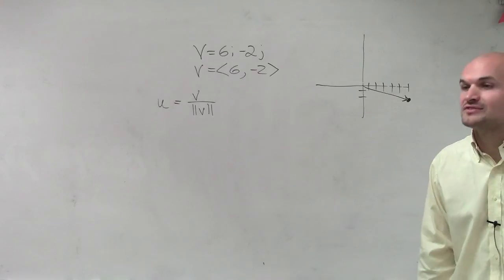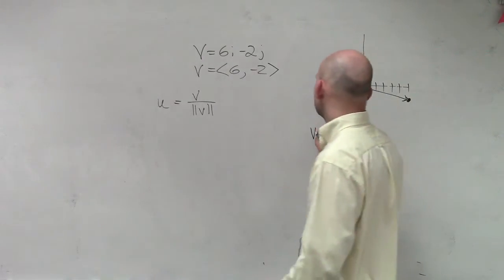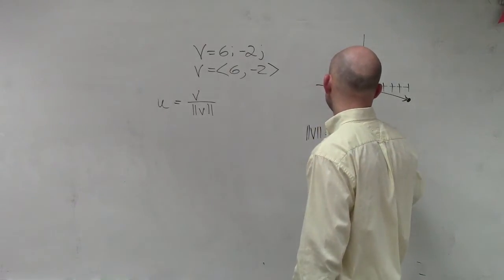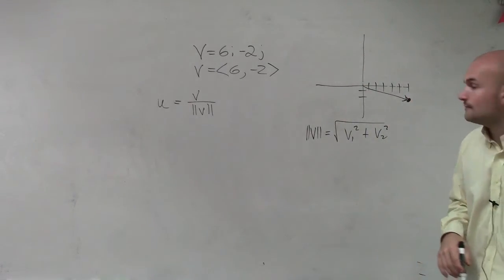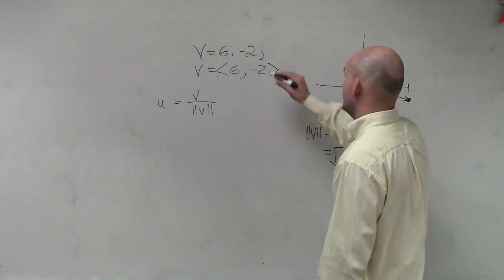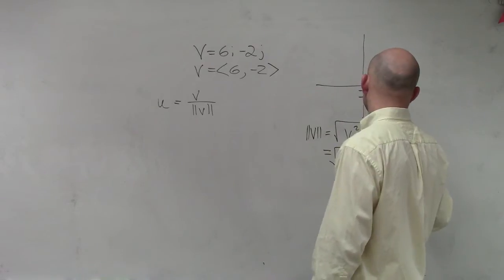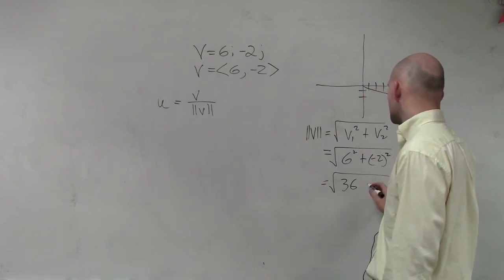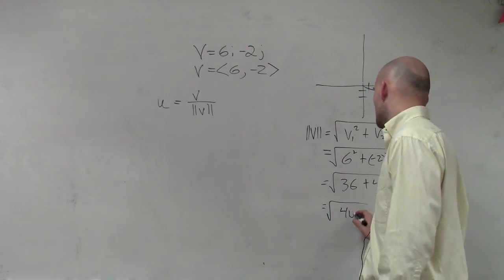So now what we need to do is figure out what the magnitude of v is and then divide it into our vector v. Remember, the magnitude of a vector v equals the square root of v₁ squared plus v₂ squared. So now we can say the square root of v₁, which is 6, squared, plus negative 2 squared, which equals the square root of 36 plus 4.